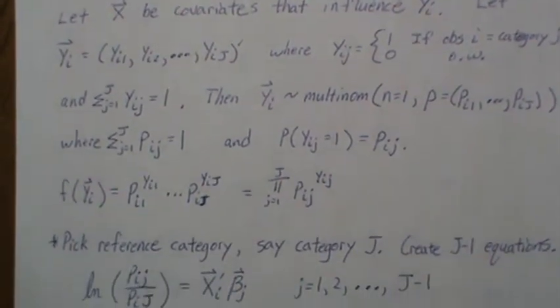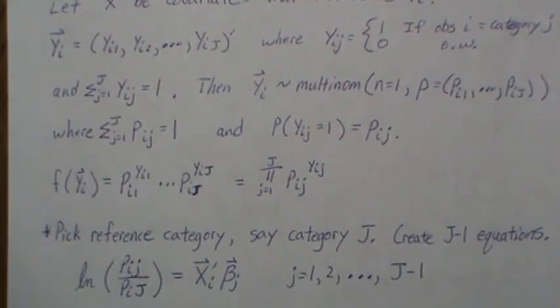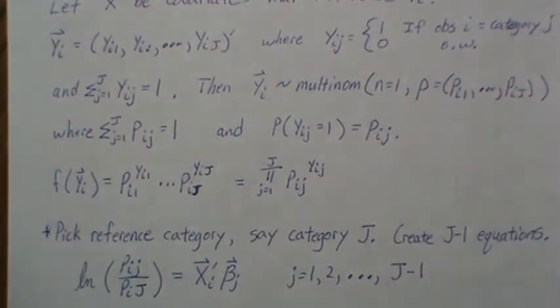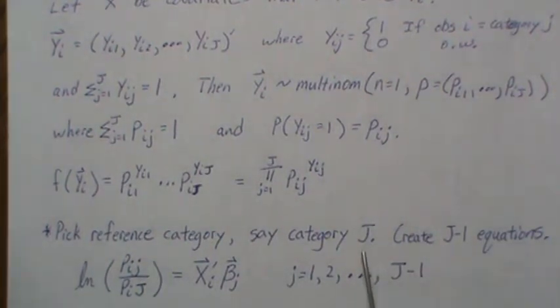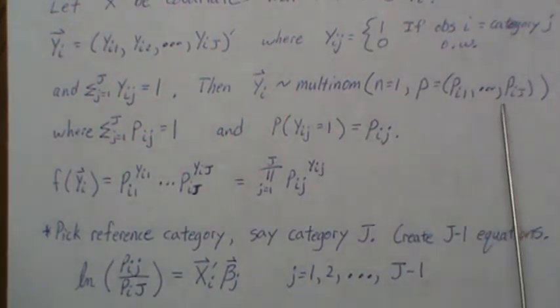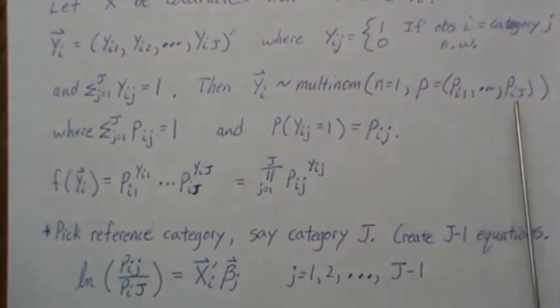In the development of multinomial logistic regression, sometimes called polytomous instead of dichotomous, meaning more than two outcomes, we want to pick a reference category. There's half a dozen or more ways for this development to take place, but I'm presenting perhaps the most common, and I think most statistical softwares do it this way. What we do is we pick a category and then we compare all the other categories against that reference category.